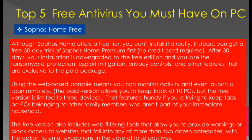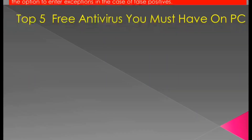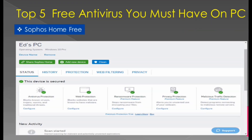Using the web-based console means you can monitor activity and even launch a scan remotely. The paid version allows you to keep track of 10 PCs, but the free version is limited to three devices — a useful feature if you are trying to keep tabs on PCs belonging to other family members. The free version also includes web filtering tools that allow you to provide warnings or block access to websites falling into any of more than 2,000 categories, with the option to enter exceptions in the case of false positives. This is what Sophos Home Free looks like when opened.